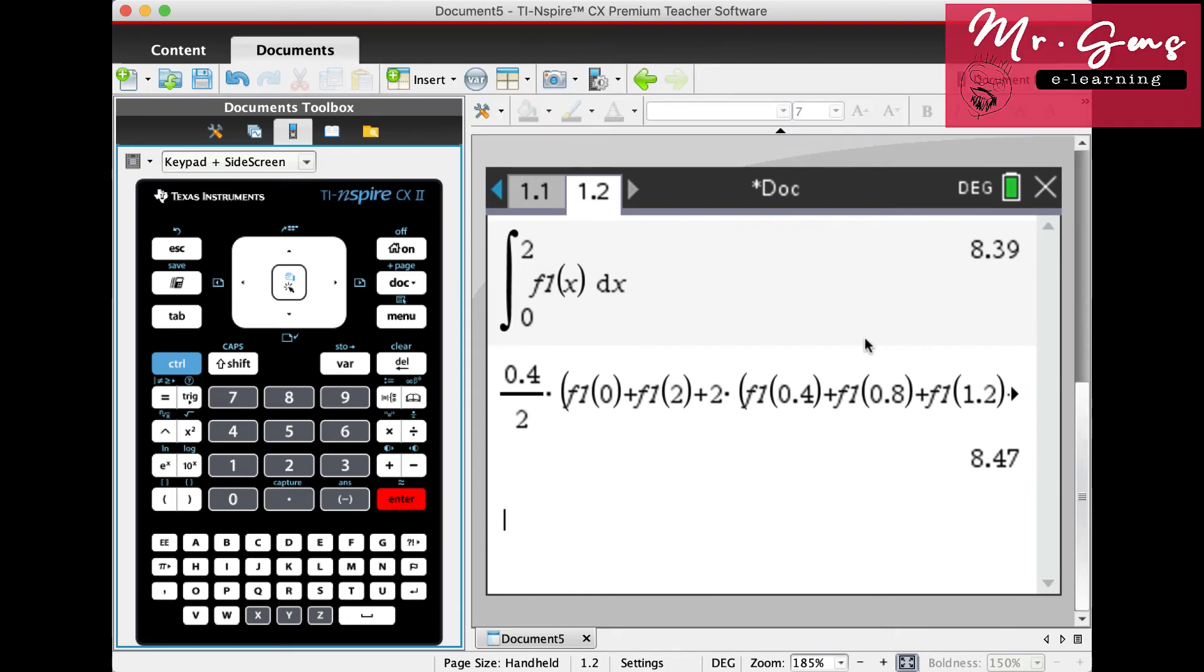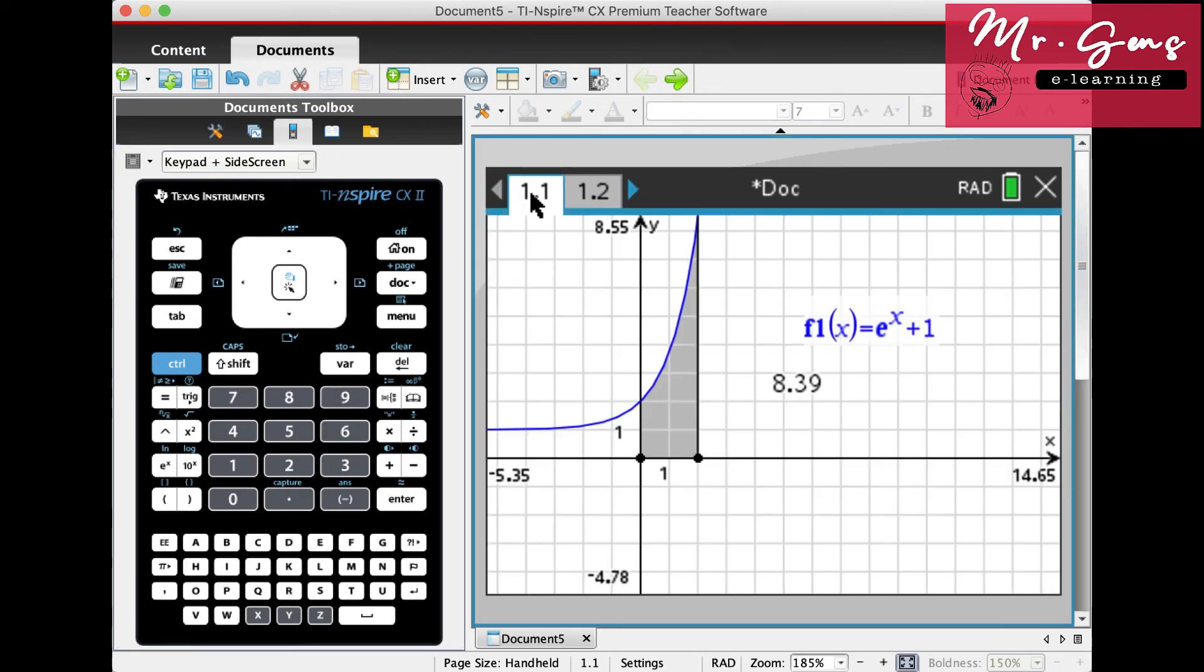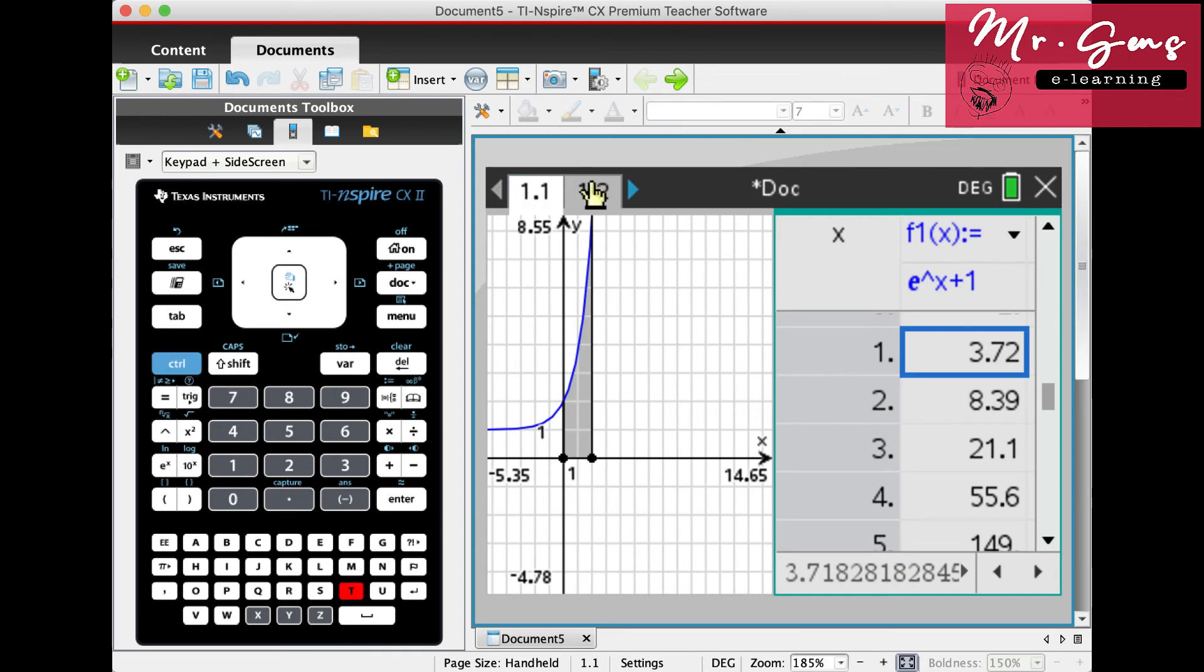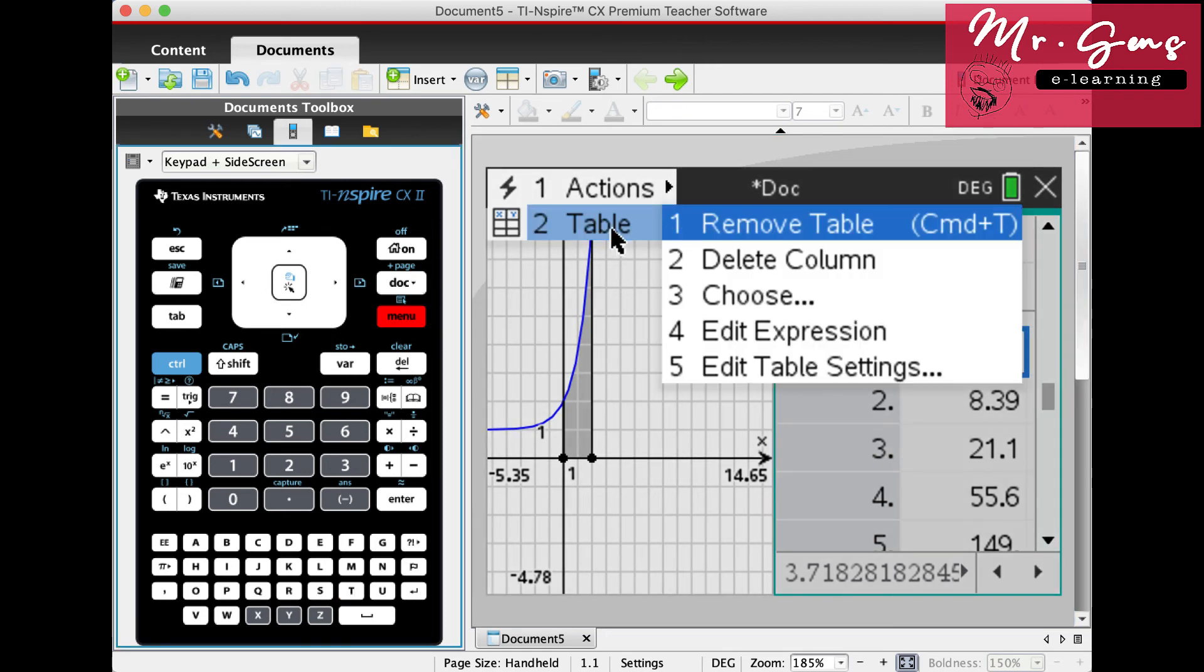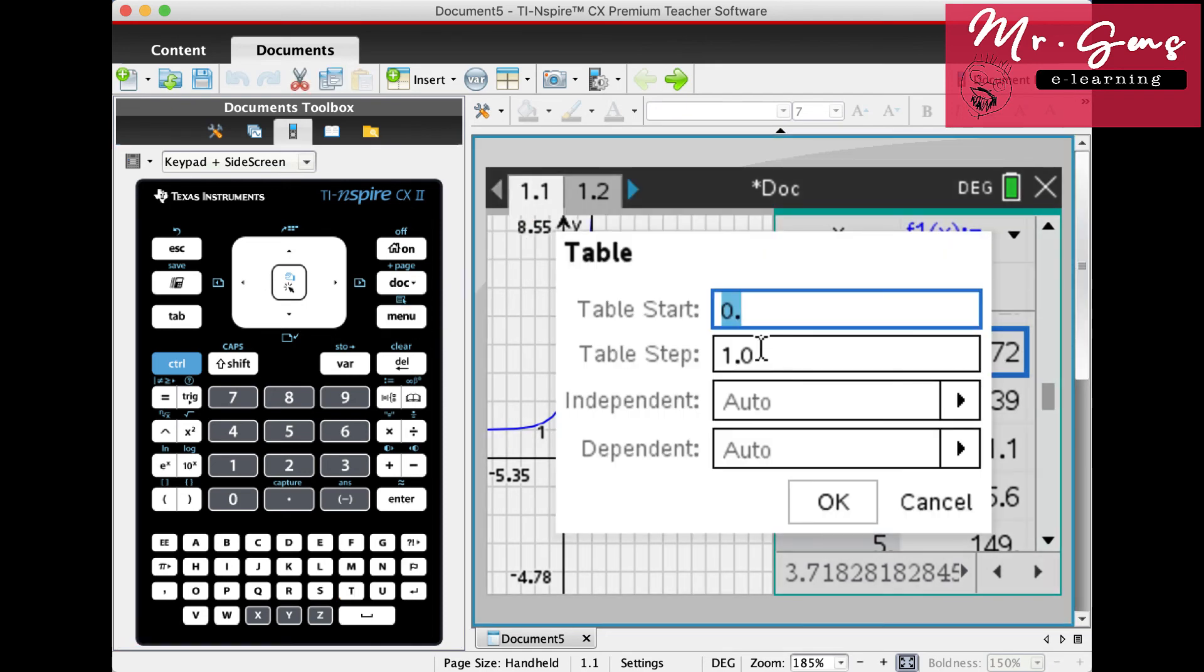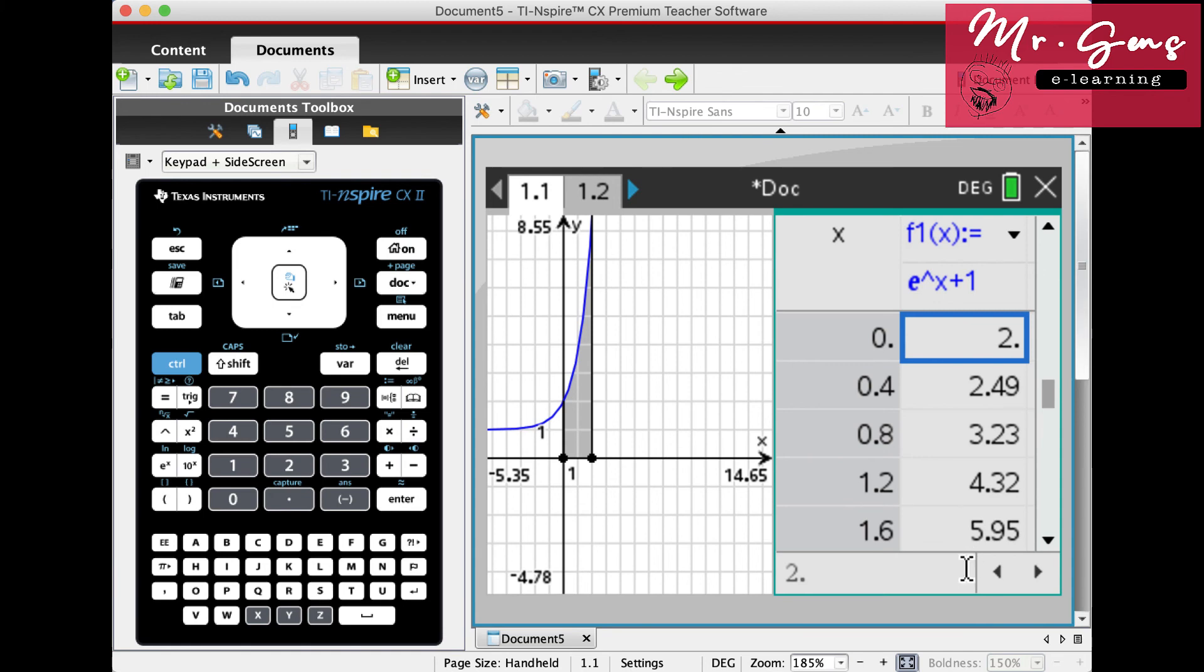On your test paper you will be expected to provide y values too, so let's calculate those by using our calculators. On the graph page I will press ctrl+T. If you press menu, then table, then go to table settings, you can decide where to start and your table step. For our case it will be height 0.4.